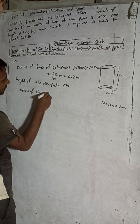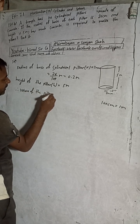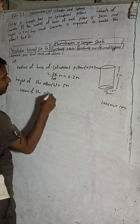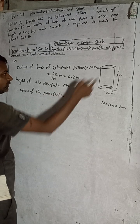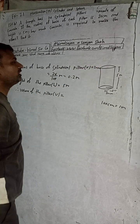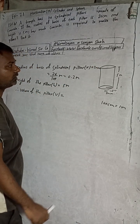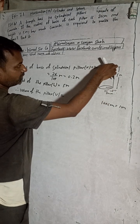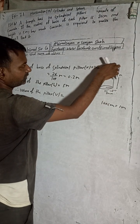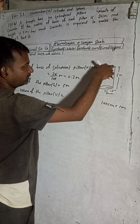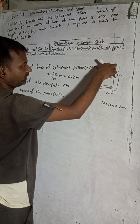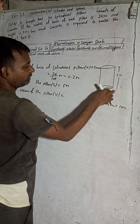Therefore, the volume of the pillar — the shape is a cylinder — so the volume of one cylinder equals the cross-sectional area multiplied by the height. The cross-sectional area is the circular base area, which is π r².